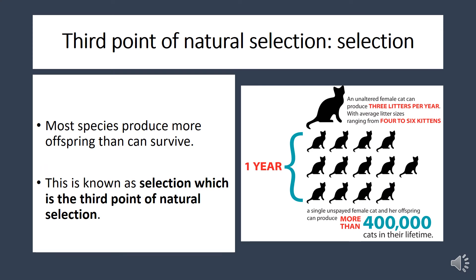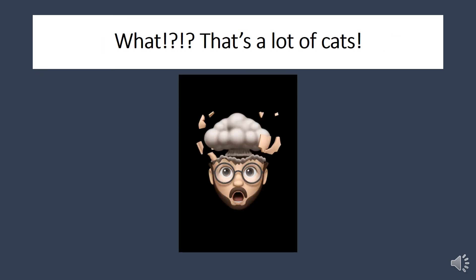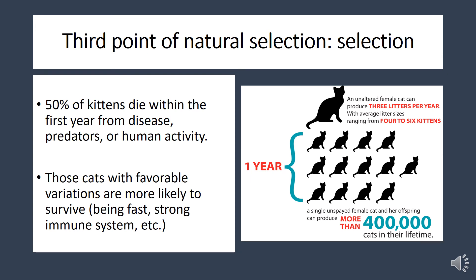Most species produce more offspring than can survive — this is known as selection, the third point of natural selection. For example, an unaltered female cat can produce three litters per year with four to six kittens per litter. A single unspayed female cat and her offspring can produce more than 400,000 cats in their lifetime. However, 50% of all kittens die within the first year from disease, predators, or human activity. Cats with favorable variations — like being fast, strong, or having a good immune system — are more likely to survive.